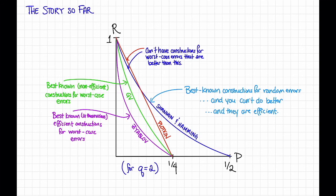One thing to note is that we only showed the efficient part in the limit as n goes to infinity — n has to be pretty large, like exponential in something polynomial in 1/epsilon, because of all that nasty dependence on epsilon in the theorem. In fact, it turns out you can do better in terms of the dependence on epsilon using something called polar codes. We probably won't talk about them in these videos, but they're super cool and you should check them out. For now, let's leave it with this really satisfying single curve that tells the entire story for binary codes on the BSC.